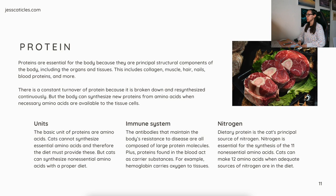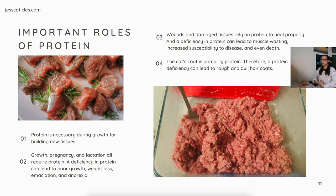Dietary protein is the cat's principal source of nitrogen, and nitrogen is essential for the synthesis of the 11 non-essential amino acids. Cats can make 12 amino acids when adequate sources of nitrogen are in the diet. Important roles of protein: first, protein is necessary during growth for building tissues. Second, growth, pregnancy, and lactation all require protein, and a deficiency can lead to poor growth, weight loss, emaciation, and anorexia. Third, wounds and damaged tissues rely on protein to heal properly, and a deficiency can lead to muscle wasting, increased susceptibility to disease, and even death. And fourth, the cat's coat is primarily protein, so a protein deficiency can also lead to rough and dull hair coats.